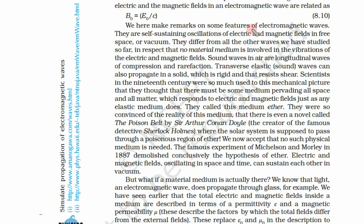We now make remarks on some features of electromagnetic waves. They are self-sustaining oscillations of electric and magnetic fields in free space or vacuum. They differ from all other waves we have studied in that no material medium is involved in the vibrations of the electric and magnetic fields. They are self-sustaining, have both electric and magnetic fields, and can travel in vacuum.